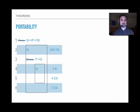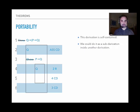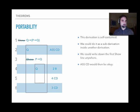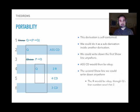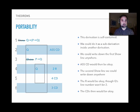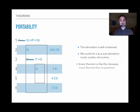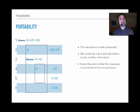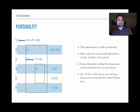Theorems have a couple of important properties. One is that they're portable. Look at this derivation — it's completely self-contained. That means we could do it as a sub-derivation inside of any other derivation. We can always write down the first show line, the assumption is okay because it just needs that show line, the third line is a show line, the fourth line repeats a line we already have, and the two CDs refer to lines four and three. So we could put this derivation inside of any other derivation and it would still be okay, because it doesn't have any premises. And every theorem is like this — every theorem has no premises — so we could take the derivation of any theorem and put it inside of any other derivation and we'd still be fine.